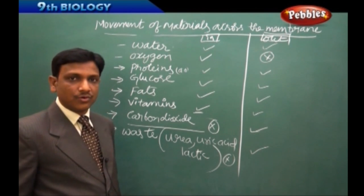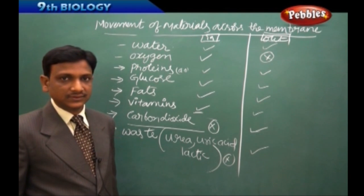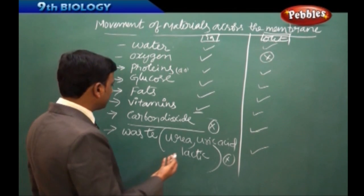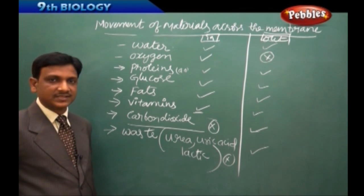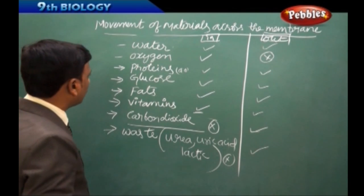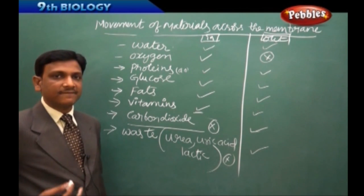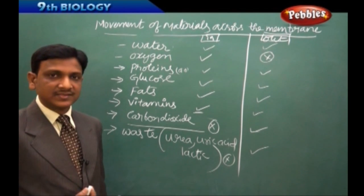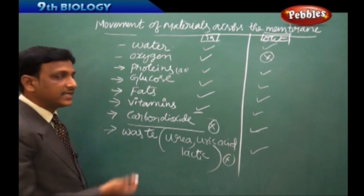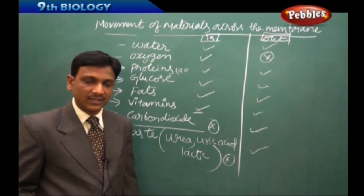Looking at this table, we understand that certain substances can go in and come out — there is a bidirectional possibility. Some substances can only enter, and some can only go out. Waste materials like carbon dioxide go out because their accumulation is dangerous, while substances like oxygen always go in because they are required. For every second in our cells there is a lot of transport — a lot of traffic — with different materials going in and coming out.